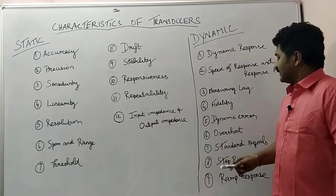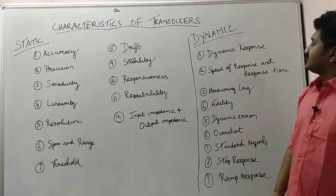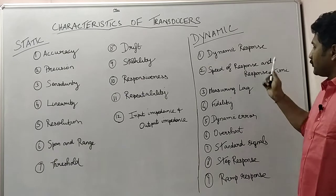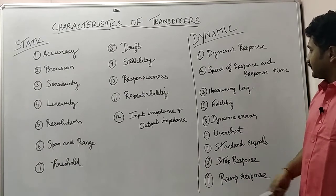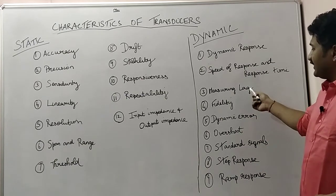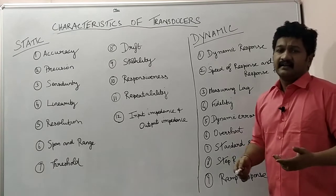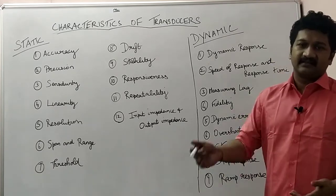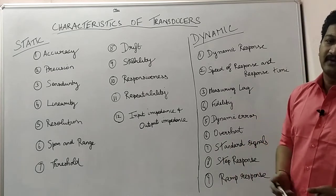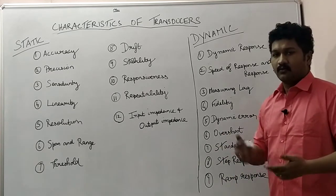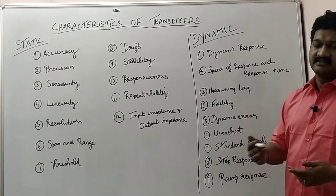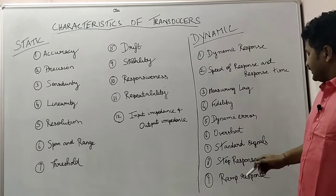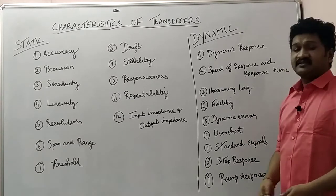When coming to dynamic characteristics, there are nine important characteristics. They are: dynamic response of a transducer, speed and response time of a transducer, and measuring lag — which is the time it takes for measuring a parameter or a desirable sensor value. Then fidelity, dynamic error, overshoot, standard signals, step response and ramp response.